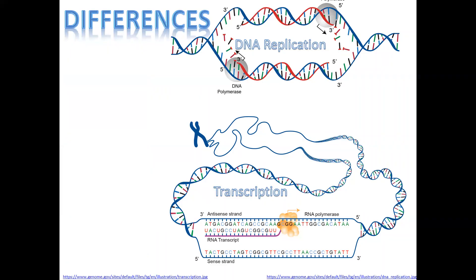When we look at the differences, the number of strands acting as templates differs. In replication, both strands act as templates — nucleotides join on the top strand as well as on the bottom strand. Whereas in transcription, nucleotides join only on one strand; on the other strand there is no nucleotide joining.